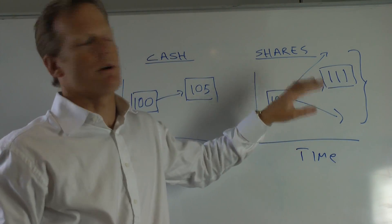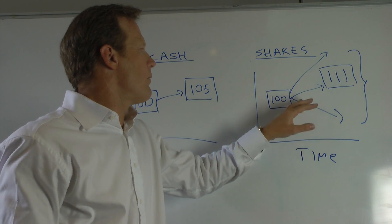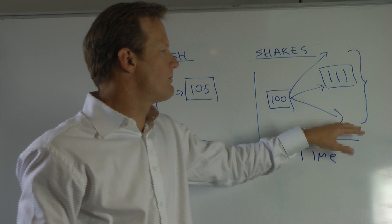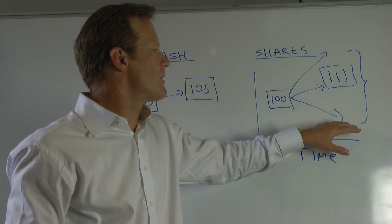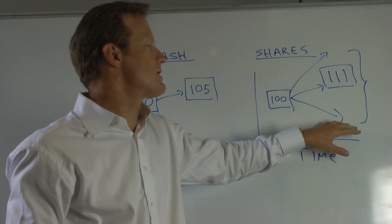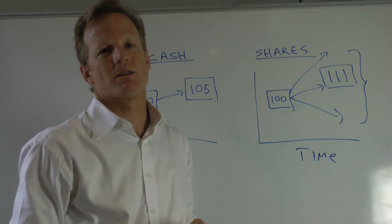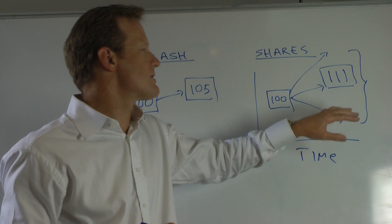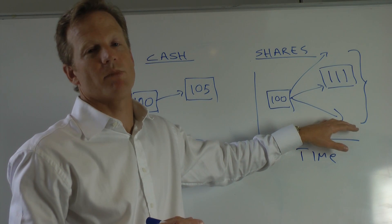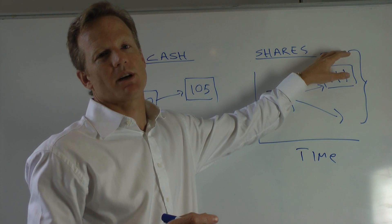The second issue that arises in relation to risk has to do with investor behavior. When this happens, when the markets perform badly and share prices go down, there's a natural tendency for investors to want to sell shares and retreat to the safety of cash. In fact there's a tremendous amount of research that's been done that shows a very clear pattern of investor behavior which is to sell shares when investment markets have performed poorly and to put more money into shares when investment markets do well.